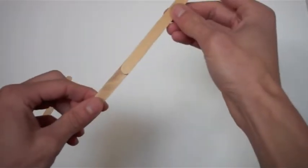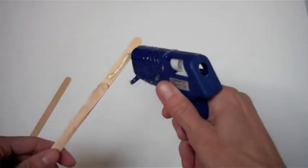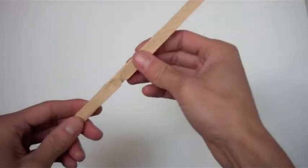We're going to start by making the propeller shaft, which is built using two craft sticks glued together. So it looks like this.